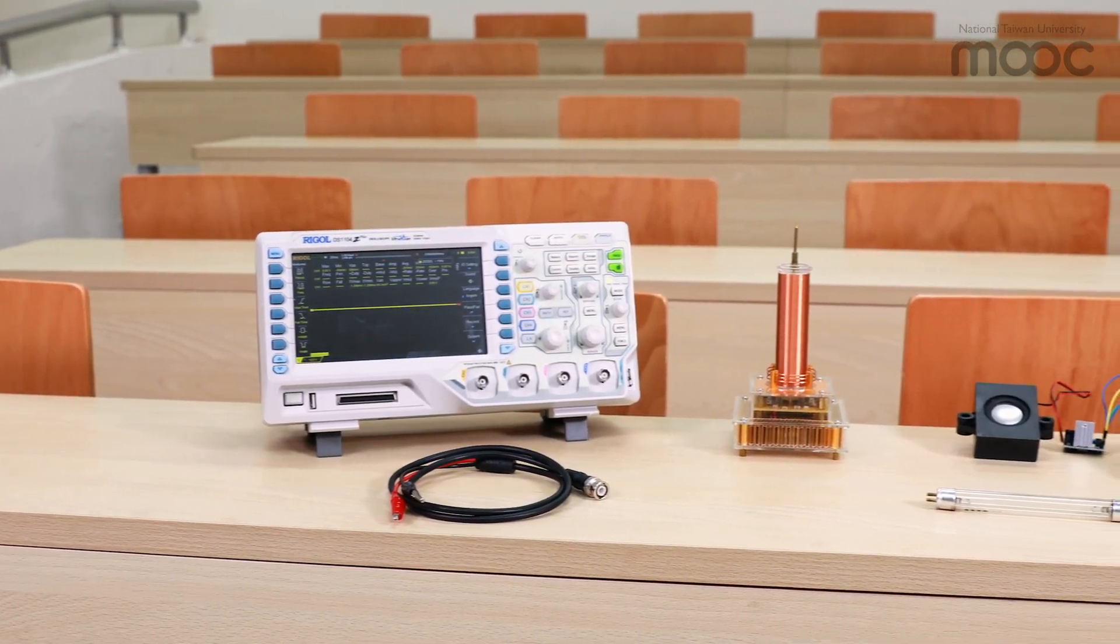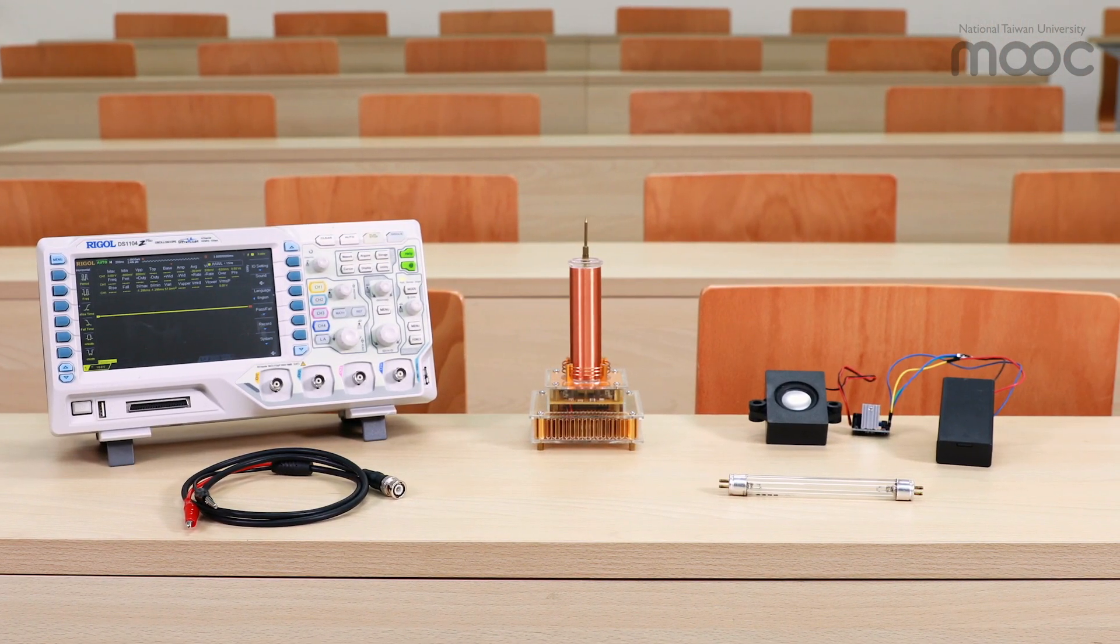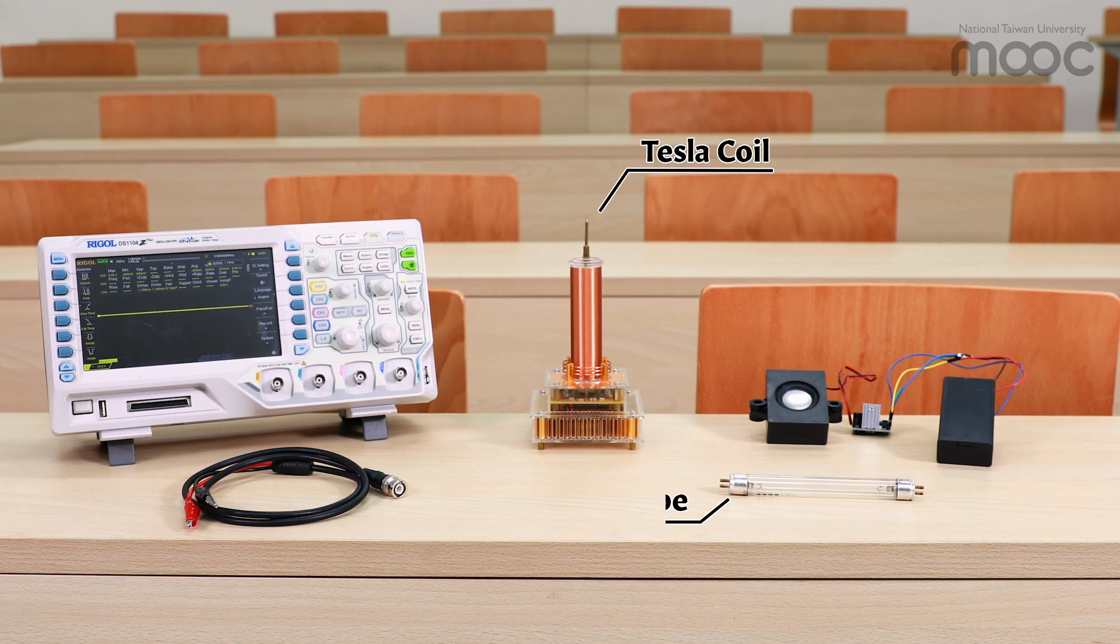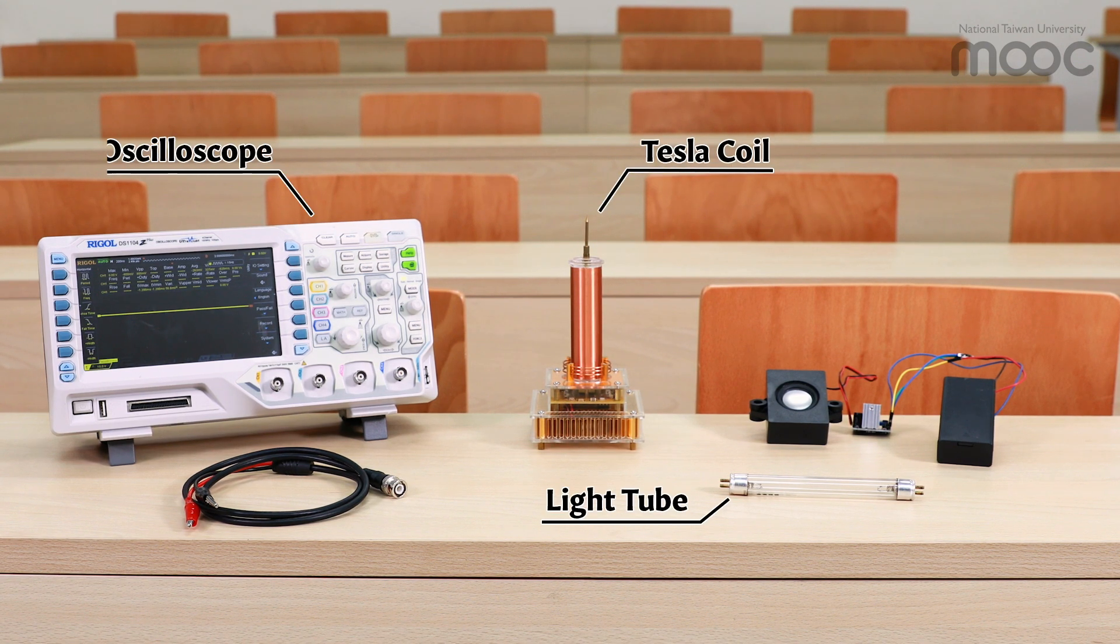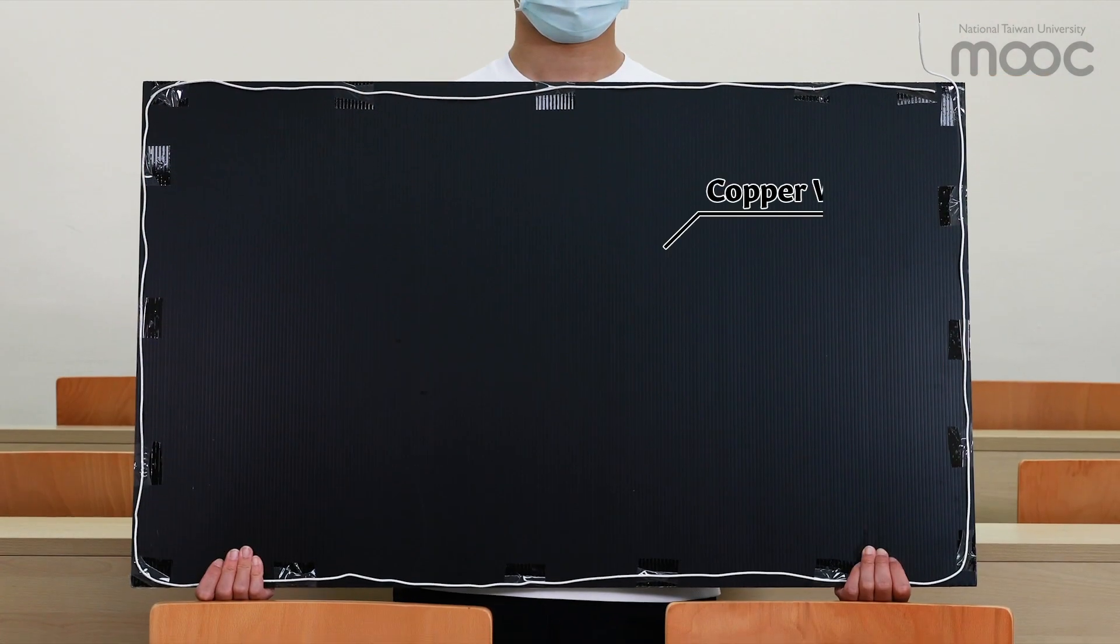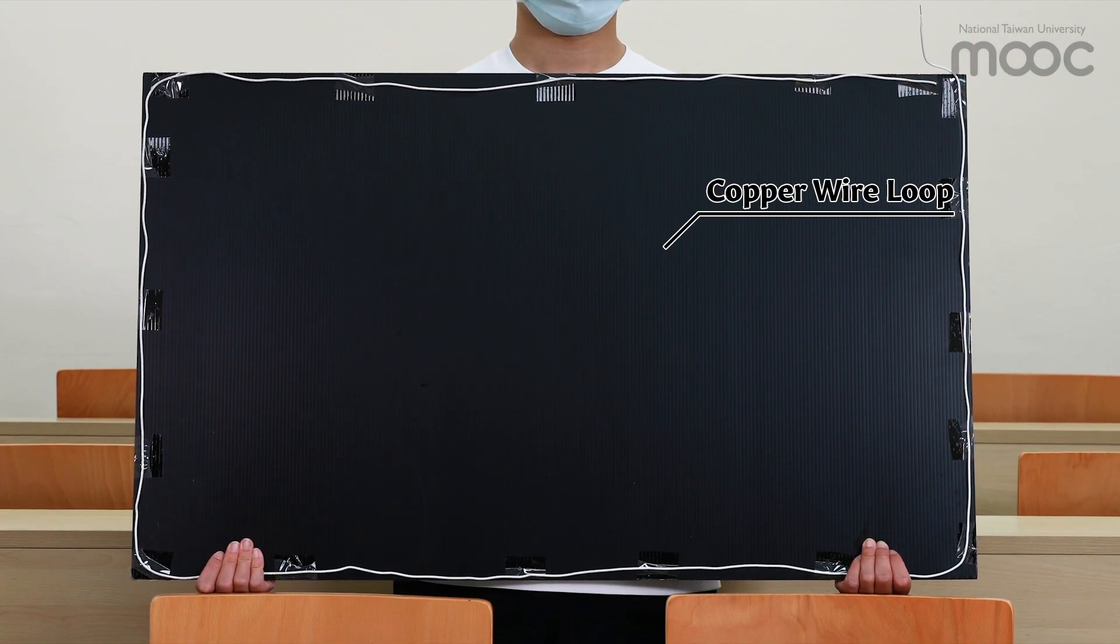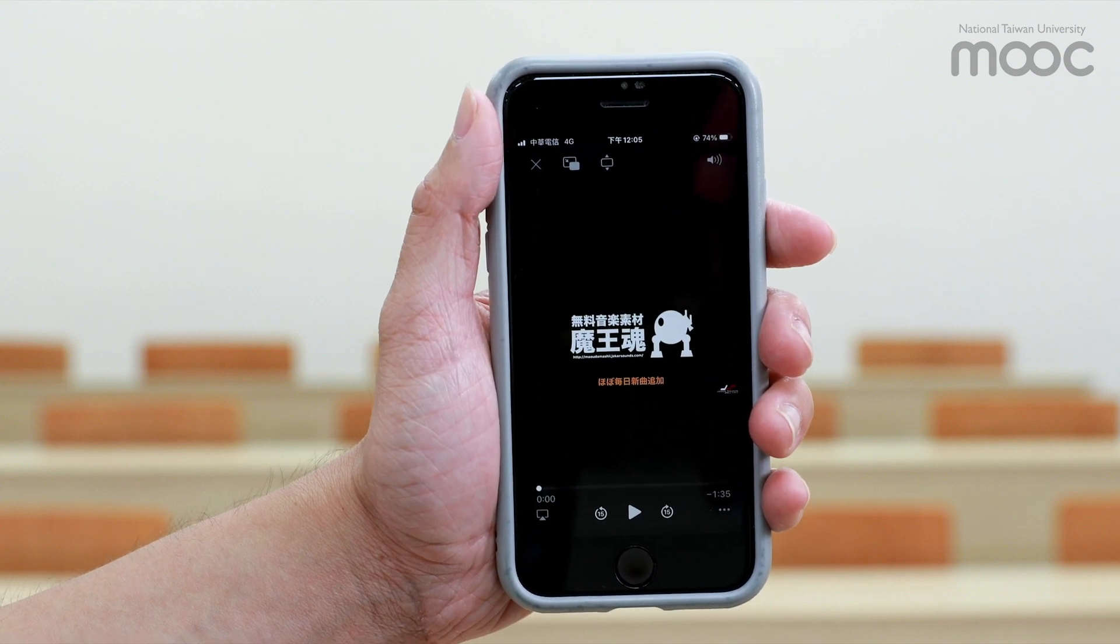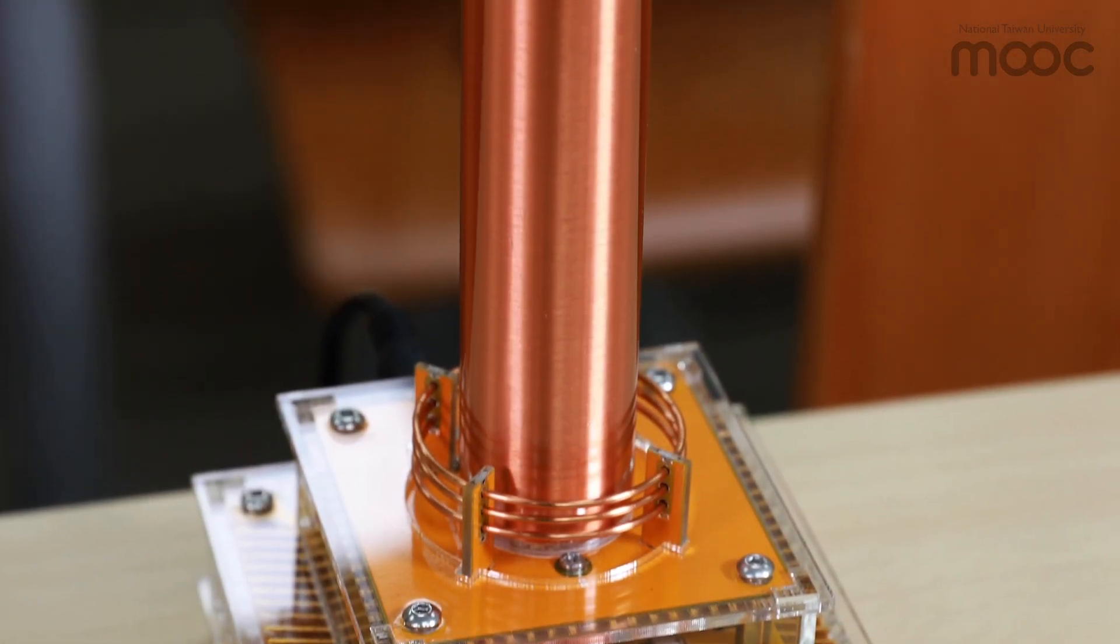Let's take a look at the instruments we will use in the demonstration. We have the Tesla coil, a light tube, a digital oscilloscope, an audio amplifier connected to a speaker, a large copper wired loop to collect radio waves, and a cell phone to input audio signals to the Tesla coil.